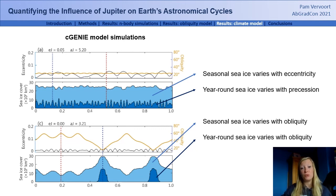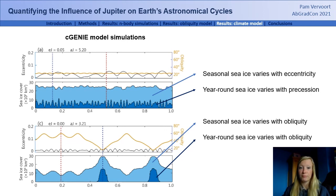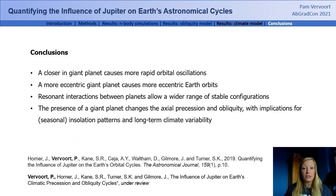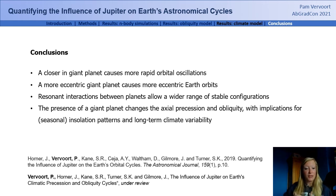In future work, we aim to use a more complex climate model with a dynamic atmosphere to account for changing wind patterns and cloud dynamics. The key conclusion is that as we find more planets in the habitable zone in multi-planetary systems, we should not ignore the long-term orbital evolution when assessing a planet's habitability. Thank you for your attention and enjoy the rest of the conference.